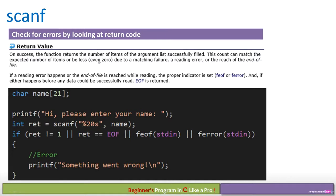Always check for errors by looking at the return code from scanf or any other function. On success, scanf returns the number of items successfully read. If you pass in one item, it should return 1 on success — any other value indicates an error. scanf can also return EOF (which is -1) as a macro value. You can use feof(stdin) to check if end-of-file was hit, and ferror(stdin) to check if there was an error — these help detect input errors or problems.